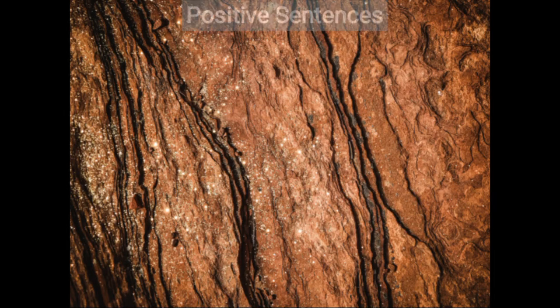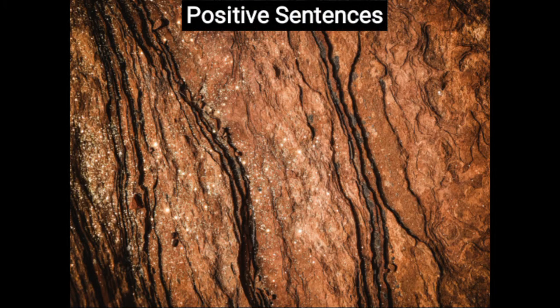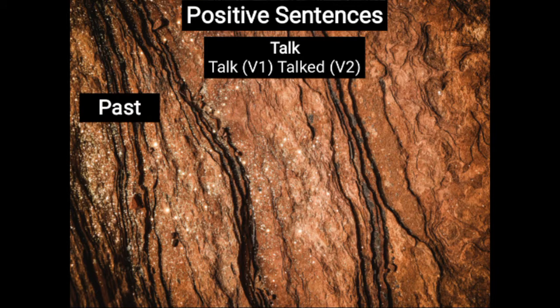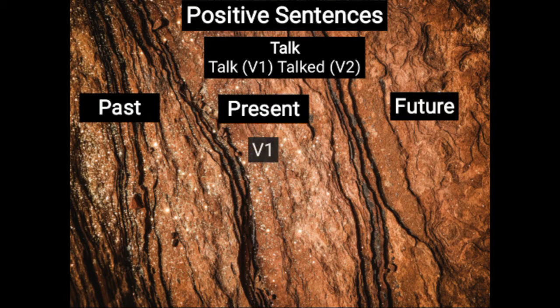Let's understand the positive sentences first. We will take the verb TALK, and the V2 form of TALK is TALKED. In the present tense, we use V1 — that is the base form.